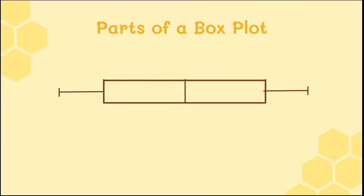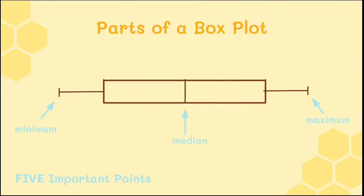So let's go over the parts of a box plot. There are five important points needed to make a box plot. The first is the minimum — the minimum value of the data set goes at the end. Then there's also the maximum. Next we have the median, which is right where the line in the middle of the box is.